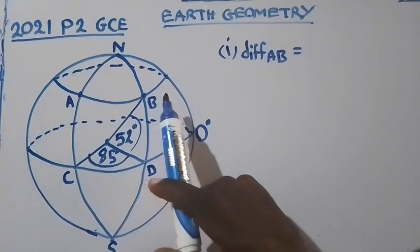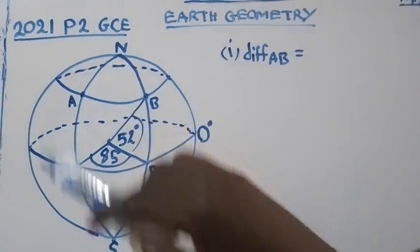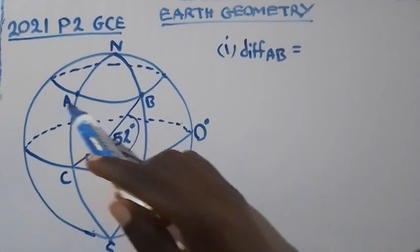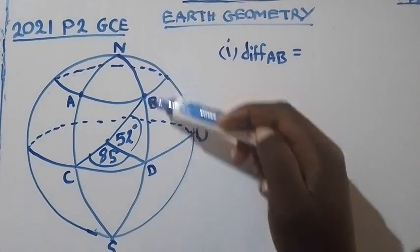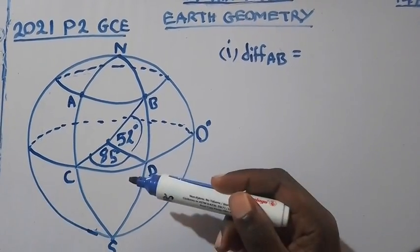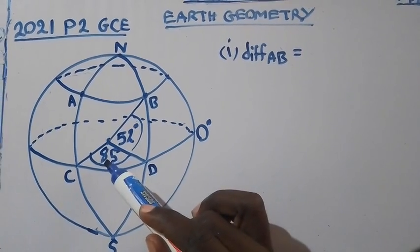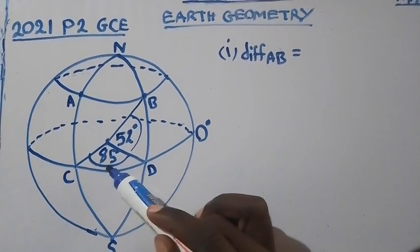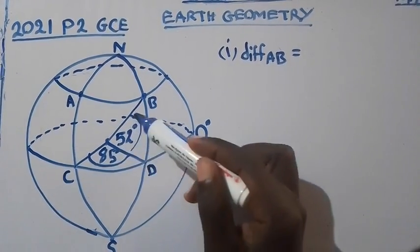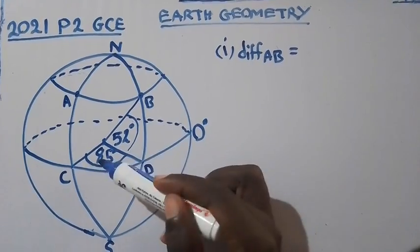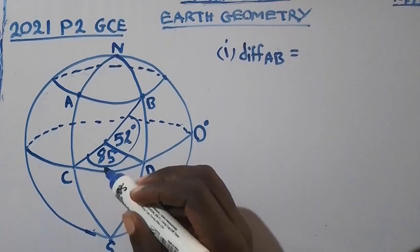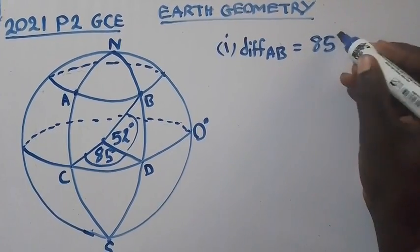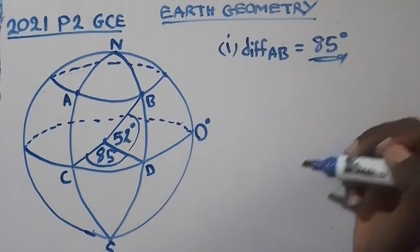So they want us to find the difference along the circle of longitudes, since the letters are around the circle of latitude. The difference is the one indicated at the center, because this is the difference along the great lines or longitudes, while this is the difference along the small circles or latitudes. So difference between A and B is 85 degrees. Just like that, you're done.